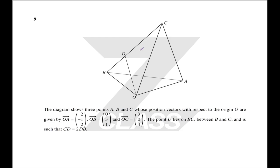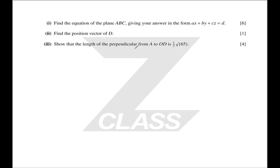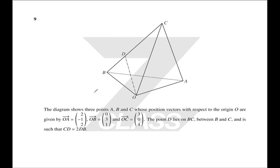Question 9: we have a vector question with points on an irregular tetrahedron. The point D lies on BC between B and C such that CD equals 2 DB. Find the equation of the plane ABC giving your answer in the required form. We know the position vectors of A, B, and C. There are various ways to do this — the best way involves doing a cross product and finding the normal, though I'm not sure whether you're supposed to know how to do that.